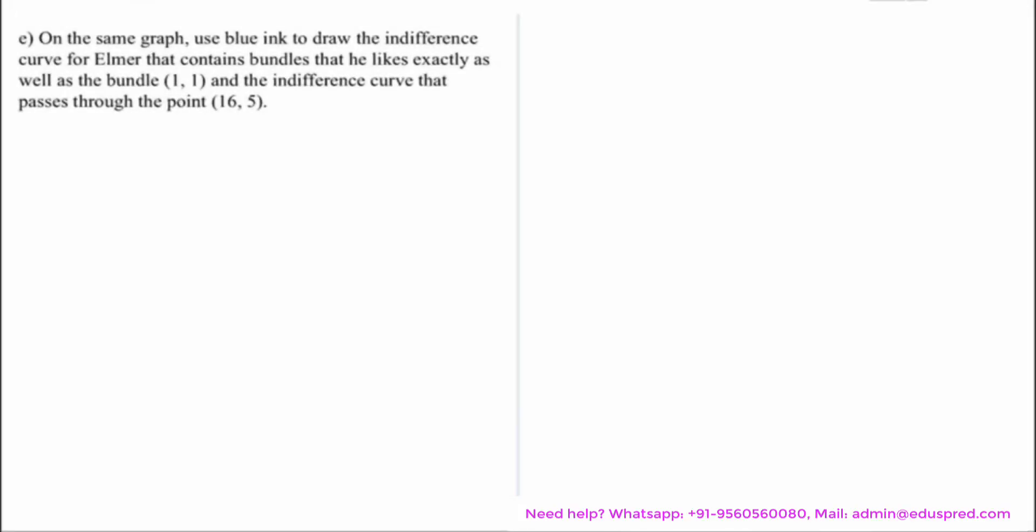In this video, we would be solving this question which says, on the same graph, use blue ink to draw the indifference curve for Elmer that contains the bundles that he likes exactly as well as the bundle (1,1) and the indifference curve that passes through the point (16,5).